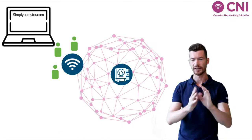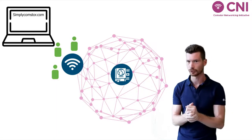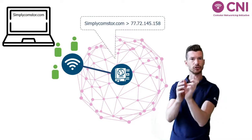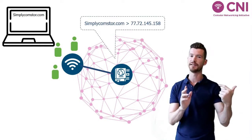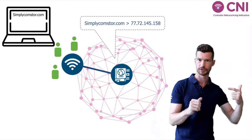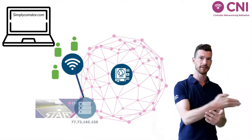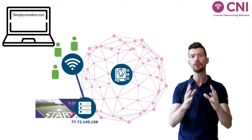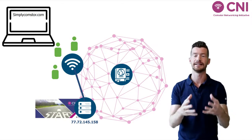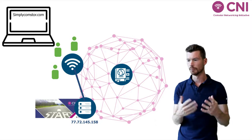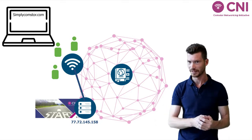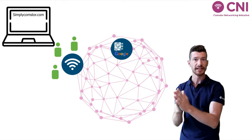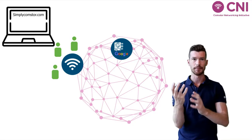If you go to the internet to any website, let's say simplycomstore.com, there is a global service on the internet which translates this user-friendly name into an IP address — the location of that server. Once that's done, you find the server and can read the files on it. There are a few vendors out there providing this service. The most familiar one is obviously Google, which simply translates user-friendly names into IP addresses.